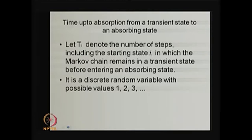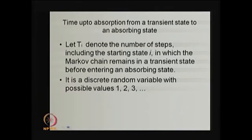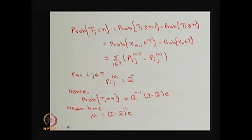T_i denotes the number of steps — including the starting state i — in which the Markov chain remains in a transient state before entering the absorbing state. There is a possibility the system spends at least one step before absorption, or two steps, or three steps and so on. Therefore that is a discrete random variable with possible values 1, 2, 3, and so on. Our interest is to find the mean time up to absorption. This probability can be computed by finding P(T_i = n) = P(T_i ≥ n−1) − P(T_i ≥ n).